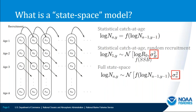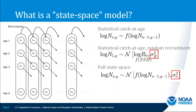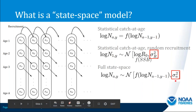A statistical catch-at-age model like ASAP or Stock Synthesis treats numbers at age as a deterministic function of numbers in the previous age and year, determined by natural mortality, fishing mortality, and selectivity. A hybrid approach estimates recruitment as random effects with some variance sigma-r. Then what we call a full state-space model treats the numbers at all ages as random effects, where the mean follows the same survival function but with variation parameterized by sigma-a.